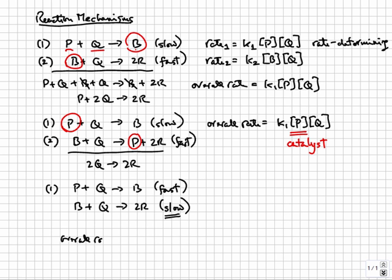The overall rate is equal to the rate of the second reaction, which is K2 times B times Q. But the concentration of the intermediate should not show up in the rate law because the rate law is supposed to reflect how the rate depends on the reactant concentrations, so we must get rid of B.